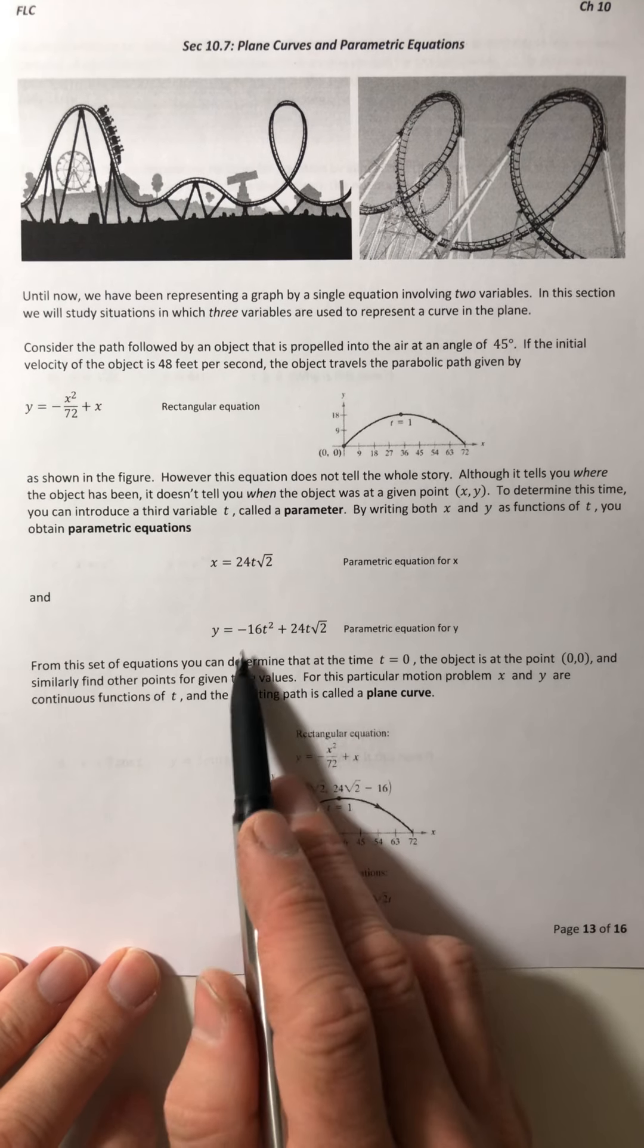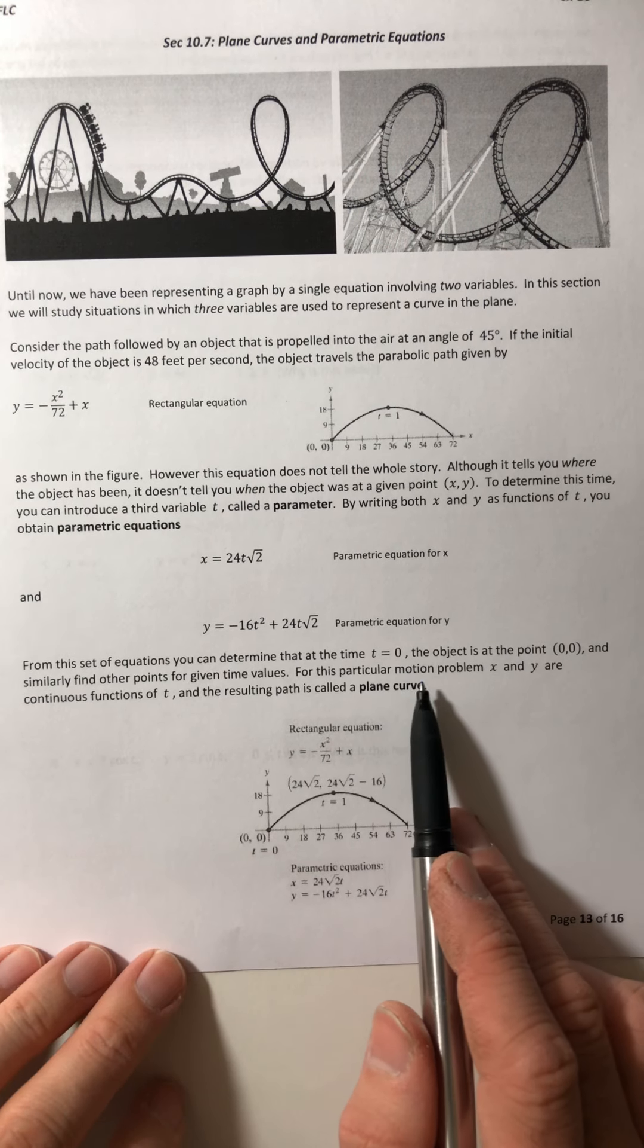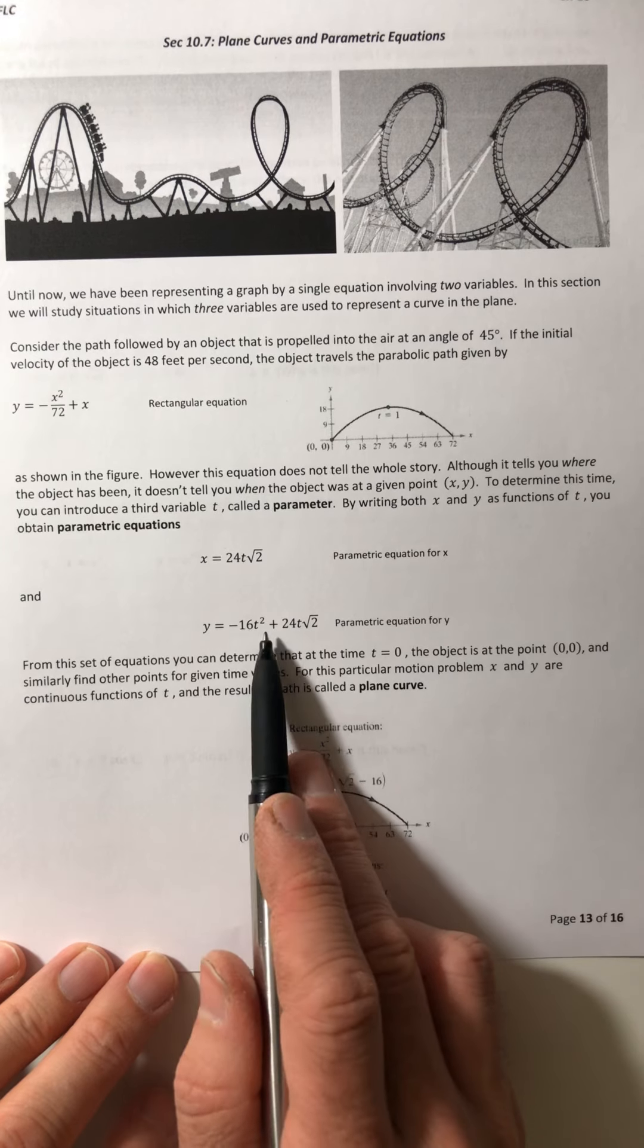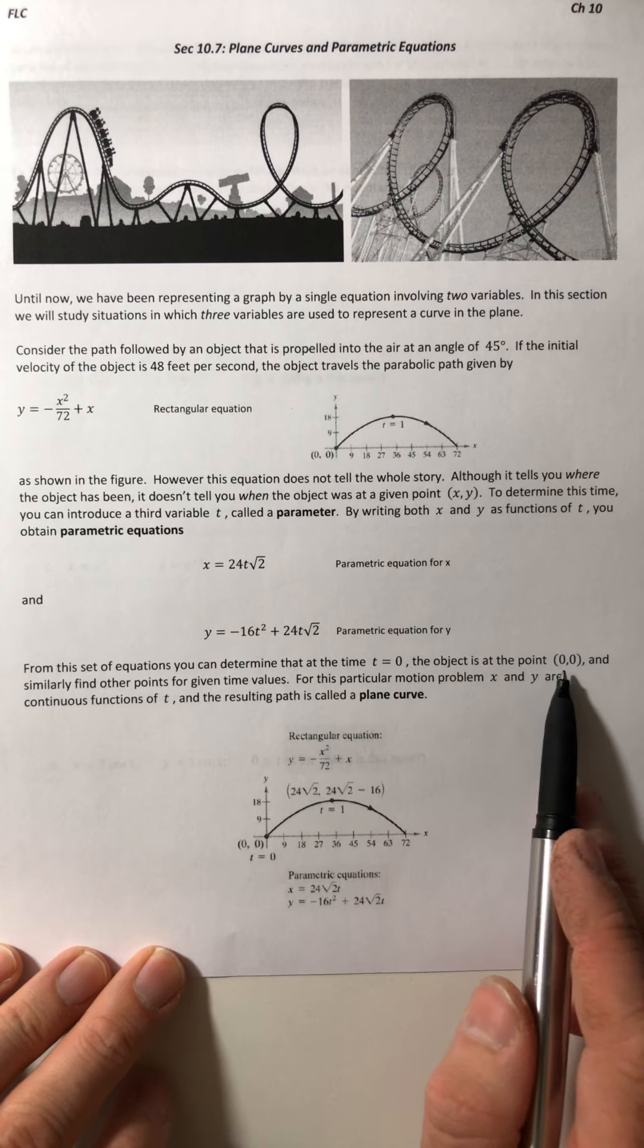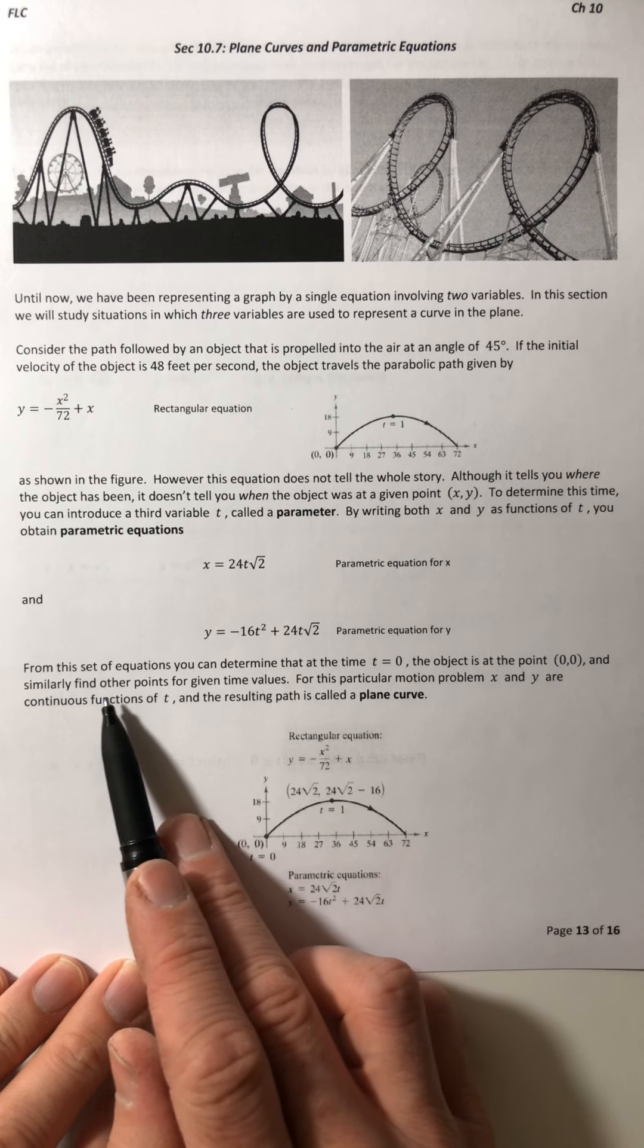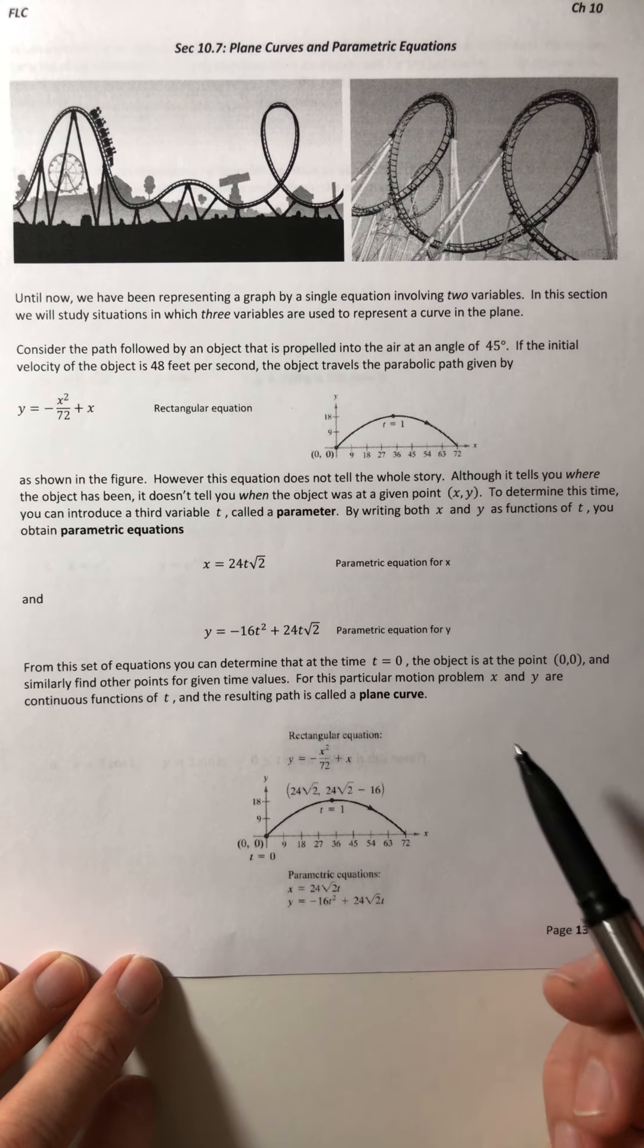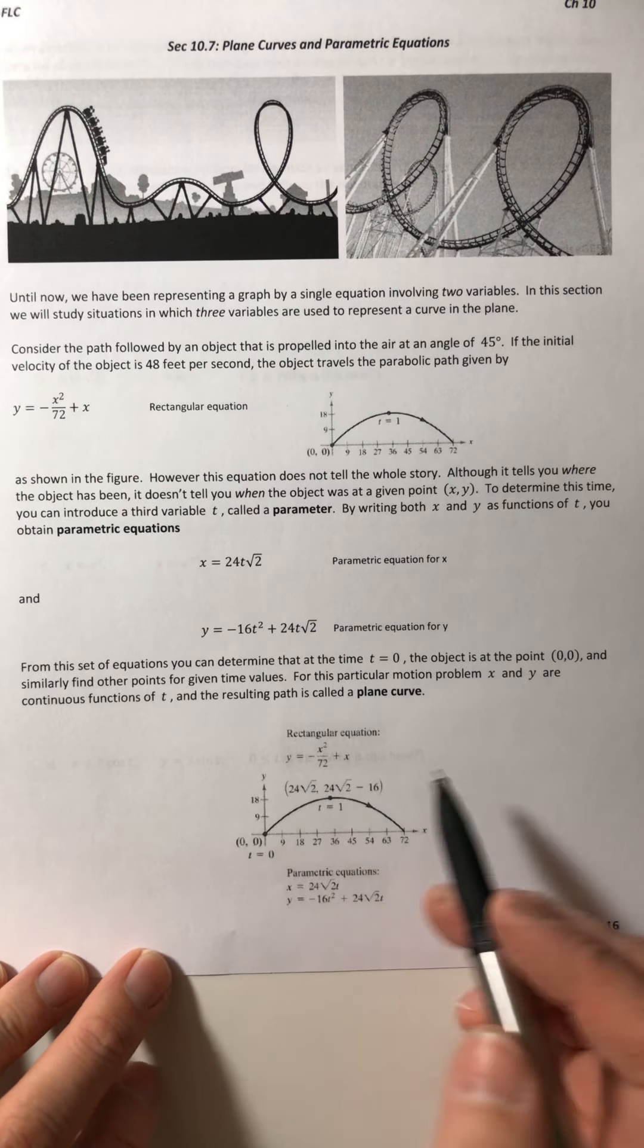From these set of equations, you can determine that at time t equals zero, the object is at the point zero, zero, because you could just plug zero in for t into both equations, and they both come out as zero for their answer. Similarly, you can find other points for given time values. If you wanted at time equals one, plug in one for t into both, and that would tell you what point you'd be at.